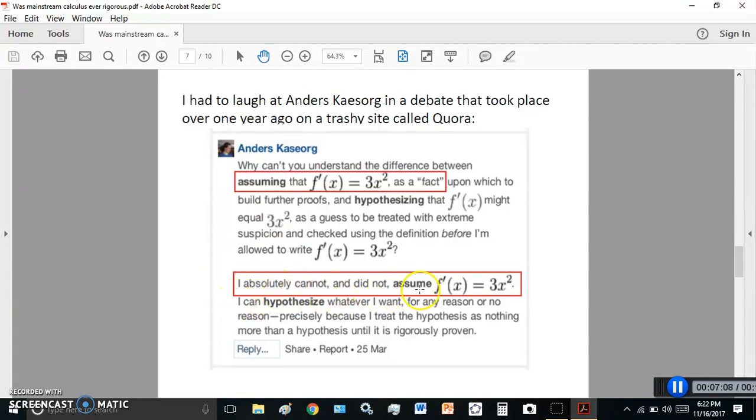I absolutely cannot and did not assume that f prime is equal to 3x squared. But he did assume it here. He said, assuming that that is a fact. So, he not only assumed it, but he assumed it as a fact. And then the poor guy, confused as he says, I can hypothesize whatever I want, for any reason or no reason. Oh, yes. Precisely because I treat the hypothesis as nothing more than a hypothesis until it is rigorously proven. And so far, he's not proven anything rigorously, except to use a circular definition and show absolutely nothing.